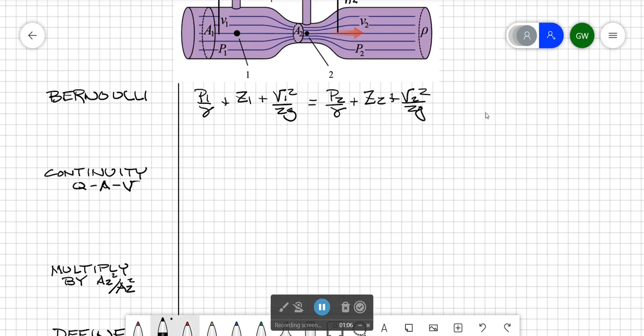Of course this assumes that we have an inviscid system with no energy losses. We have a horizontal pipe so z1 equals z2. Those can cancel out.